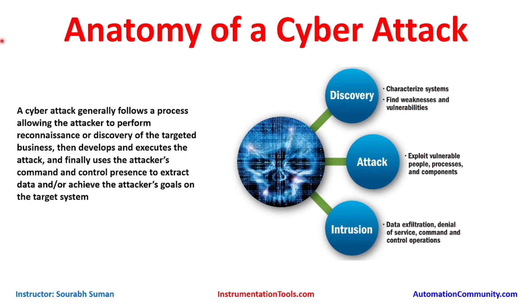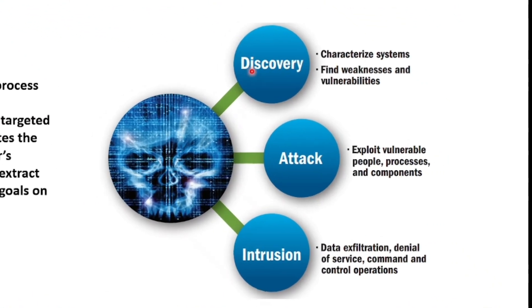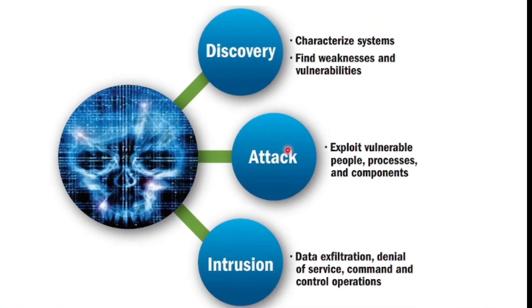Basically a cyber attack starts with three processes: one is discovery, another is attack, and the third is intrusion. In the discovery phase, the attacker characterizes systems and finds weaknesses and vulnerabilities. In the attack phase, they exploit vulnerable people, processes, components and data. In the intrusion phase, it involves data exfiltration, denial of service, and command-and-control operations.